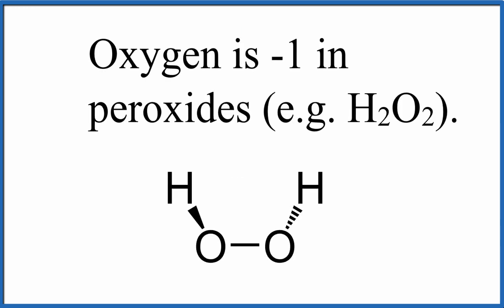First, and this is a favorite of test writers, H2O2 and the other peroxides, oxygen has an oxidation number of minus one. But we could have figured this out because hydrogen's always plus one when it's with a non-metal. And the oxygen, in order to balance that out, is going to have to be a negative one.